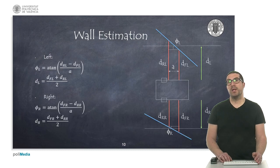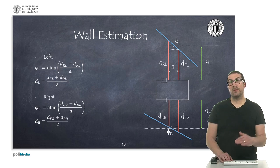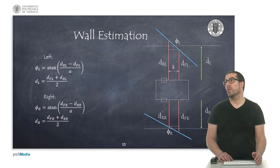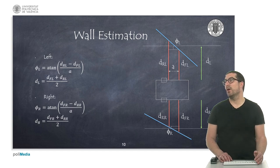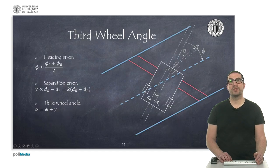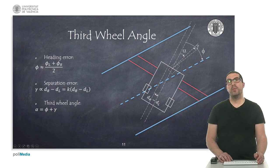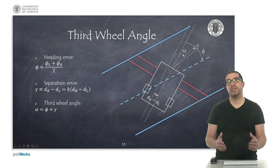With the LiDAR sensors, we can estimate the angle and distance of each wall — the one on the left and the one on the right. Here we show some simple calculations: it's computing the angle of a line and the mean distance using these sensors. Once we have the angle and distance of each wall, we need some kind of error measure that we would like to minimize.